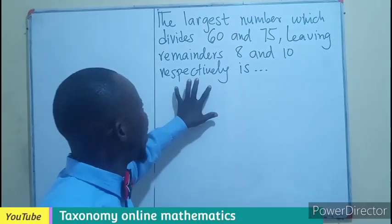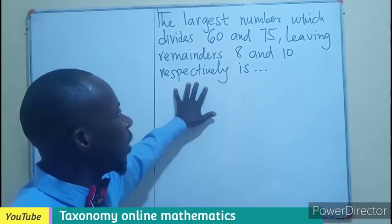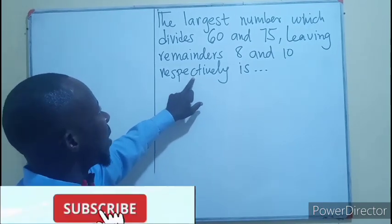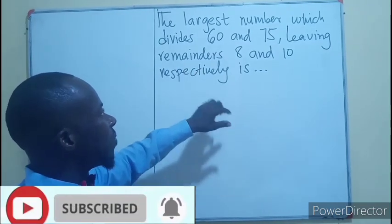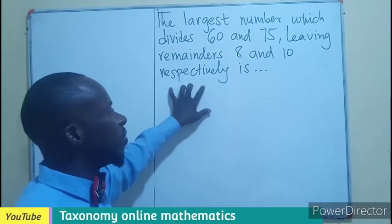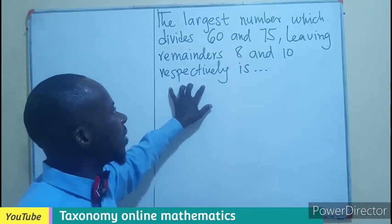Hello, welcome. We have this question that has been on my timeline for about a week now. The largest number which divides 60 and 75 leaving a remainder of 8 and 10 respectively is what we're looking for. The largest number that can divide this.